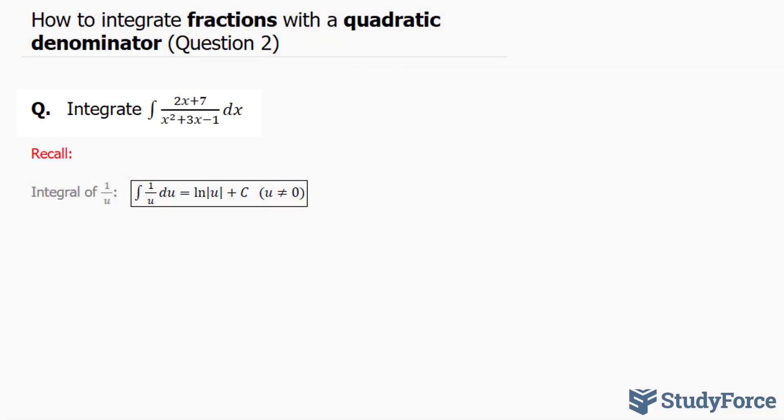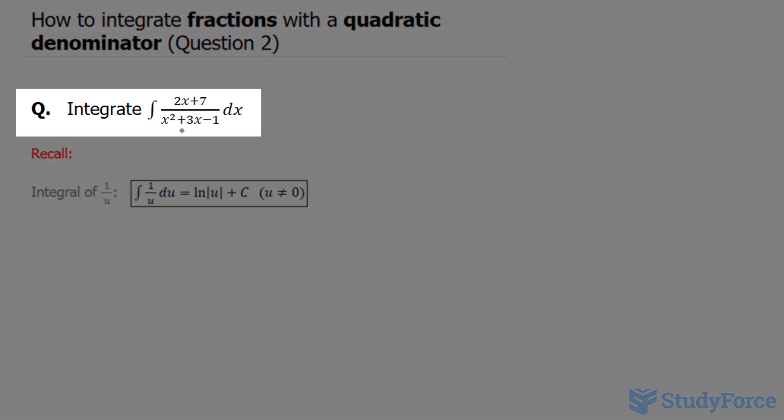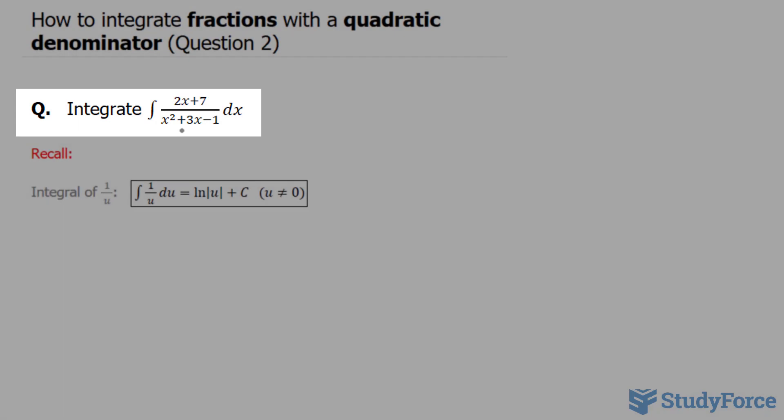In question 2 of this series, we're asked to integrate the function 2x plus 7 over x to the power of 2 plus 3x minus 1 with respect to x.